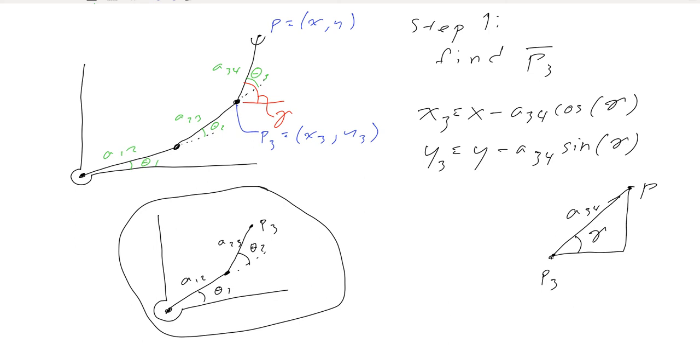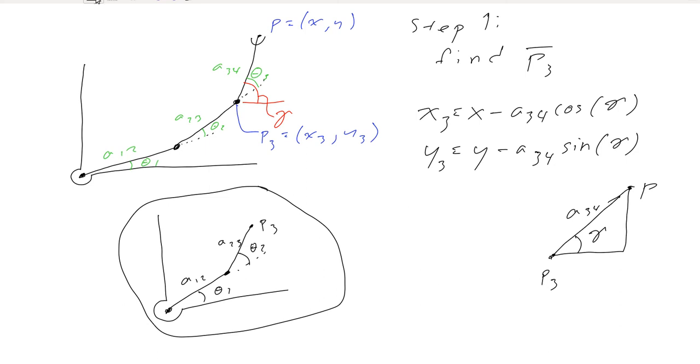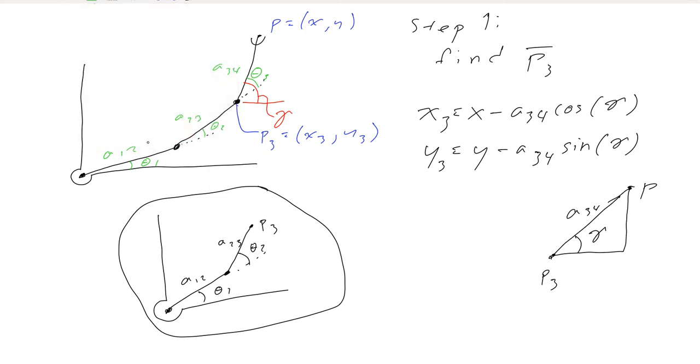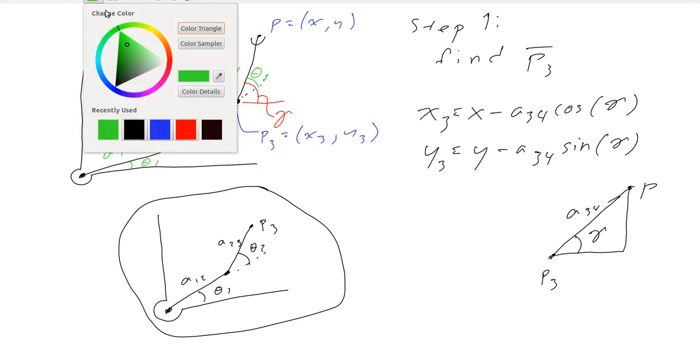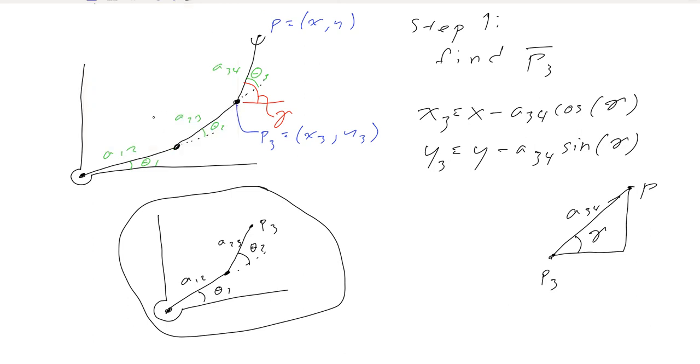So once we have P3, then that immediately leads to the 2R inverse problem. So that gives us theta1 A and B, and theta2 A and B. And then to find theta3, well, let me show you the A and B scenarios. So say I've drawn theta1 A and theta2 A.